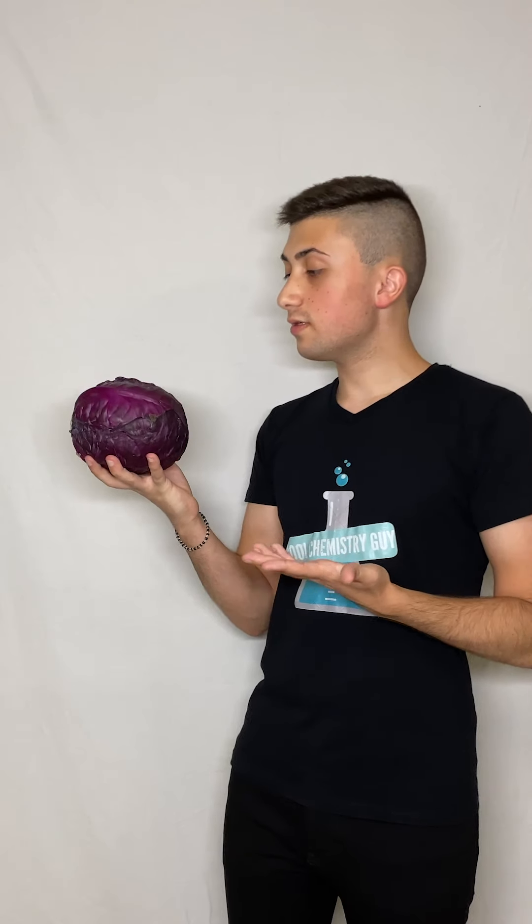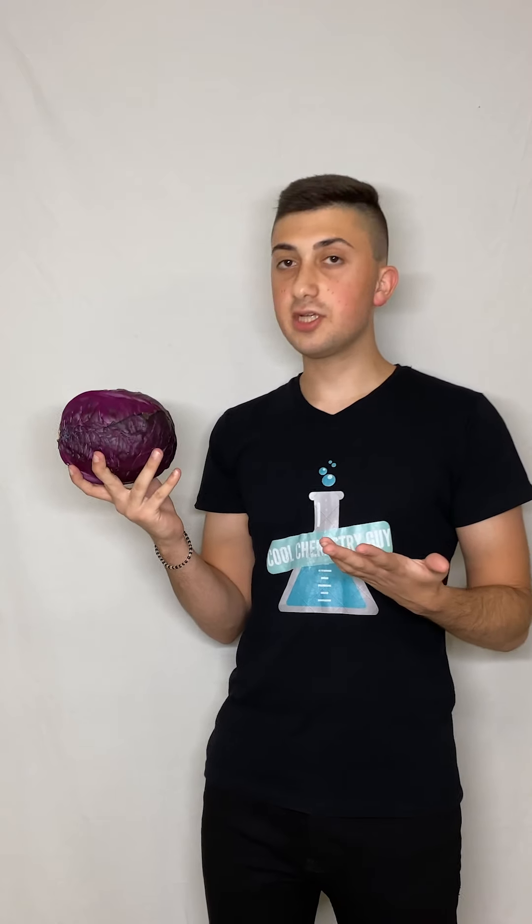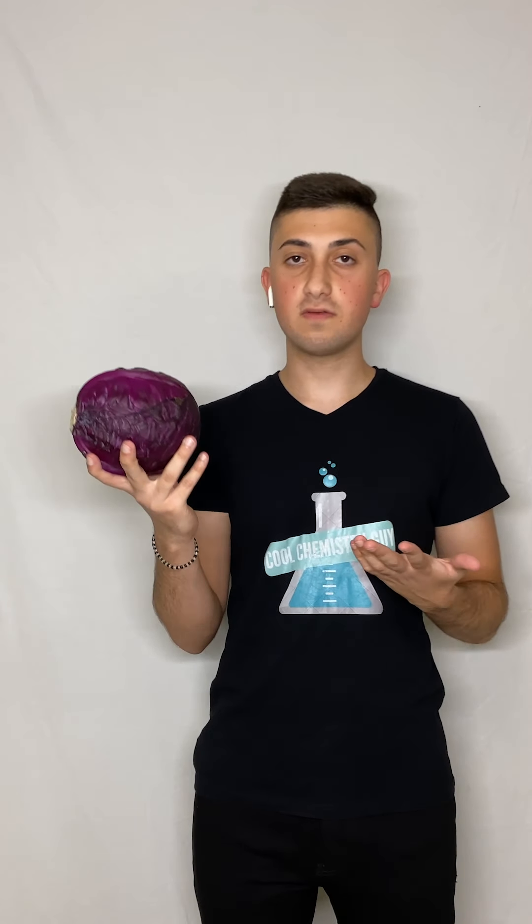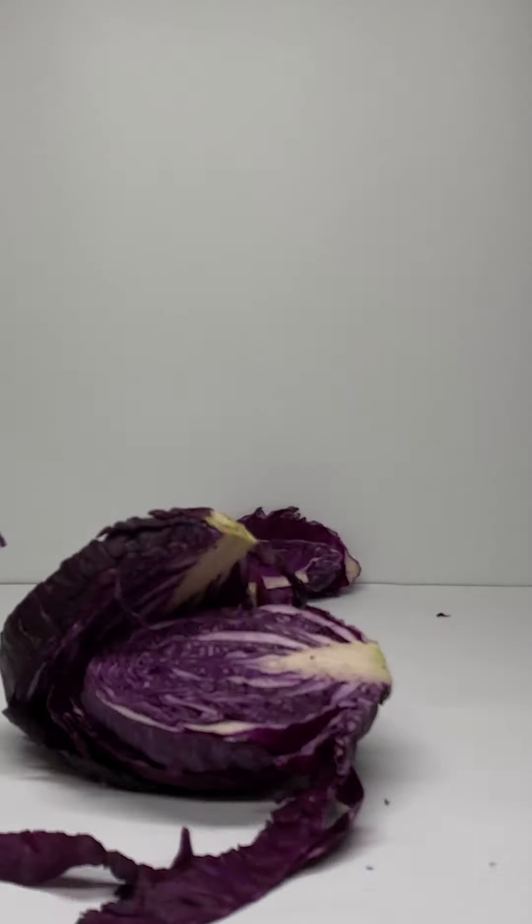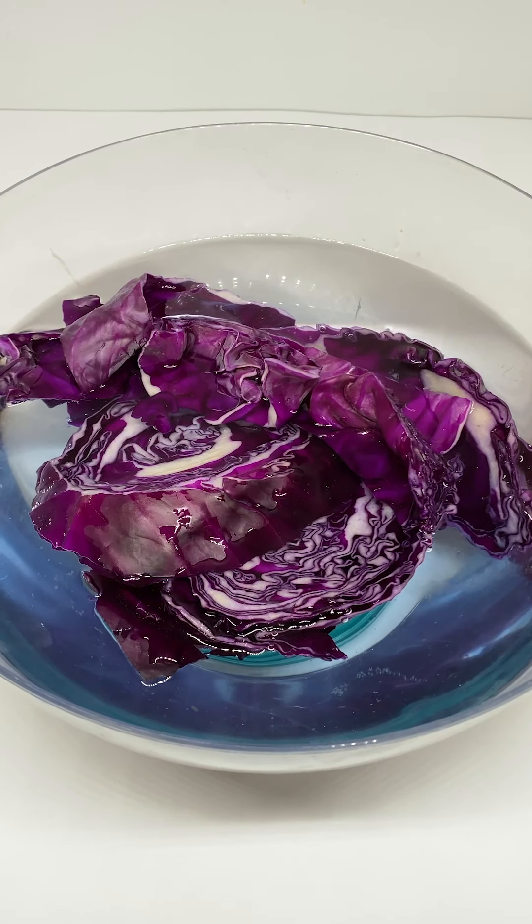This is a red cabbage and I know that it's gross and stinky but there is something cool about it. It's a pH indicator. It changes its color in the presence of different levels of pH. So we start by cutting it and putting it in hot water. Ten minutes later the water will turn blue.